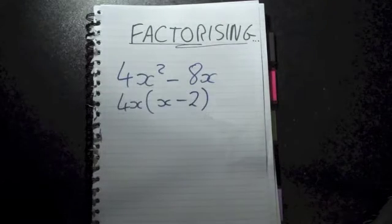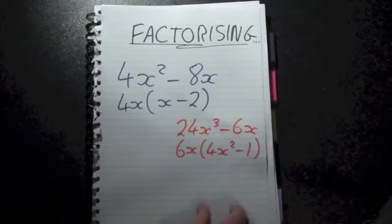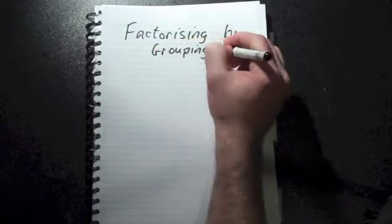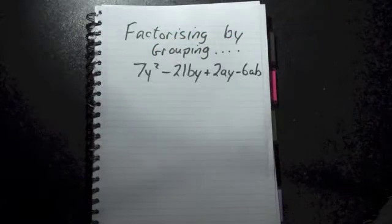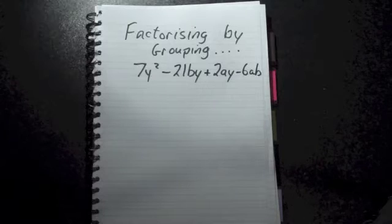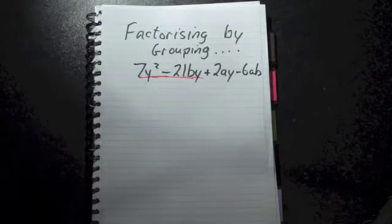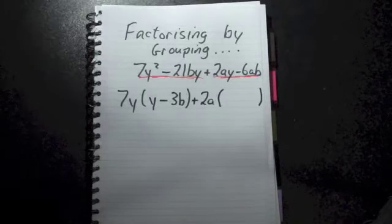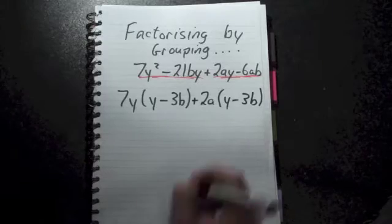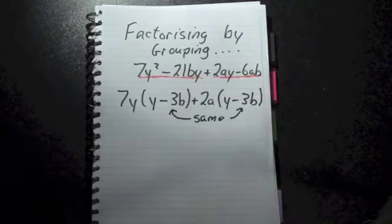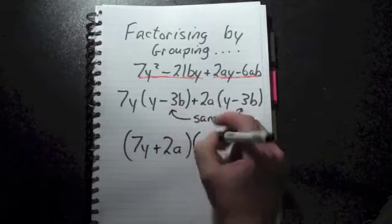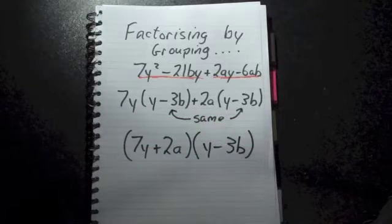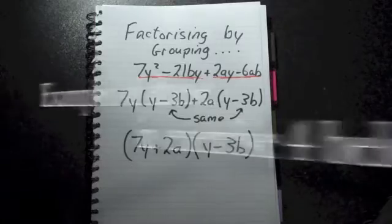In previous sections of this chapter we learned how to factorize certain expressions, and that's exactly what we're going to do to quadratics as well. But before we do that, let's look back over a different type of factorizing we've already covered called factorizing by grouping. We take out what's common from the first two terms — in this case 7y — then what's common from the second two terms — in this case 2a. We know we're right because what's left in both brackets is the exact same, so we put both brackets back together. This is also a very important part of factorizing quadratics.